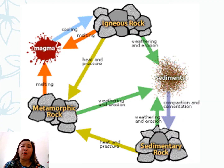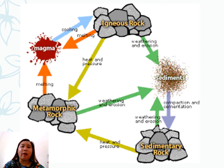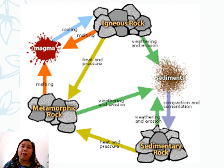This illustration shows how the three types of rocks are being formed. Igneous rocks are formed from the cooling of magma. And when igneous rocks undergo weathering or erosion, this can form sediments. And these sediments, when exposed to compaction and cementation, can form the sedimentary rocks. And when these sedimentary rocks have been exposed to heat and pressure, it can form the metamorphic rocks. So this is the cycle of the three types of rock forming.